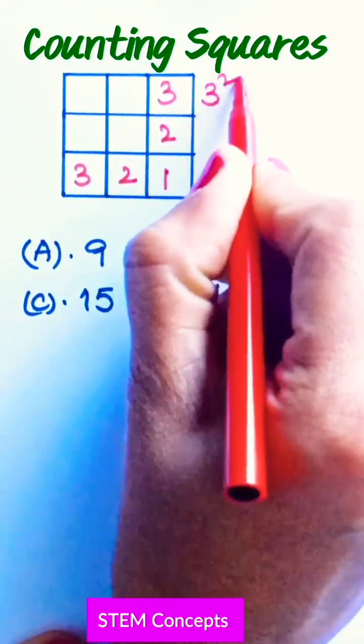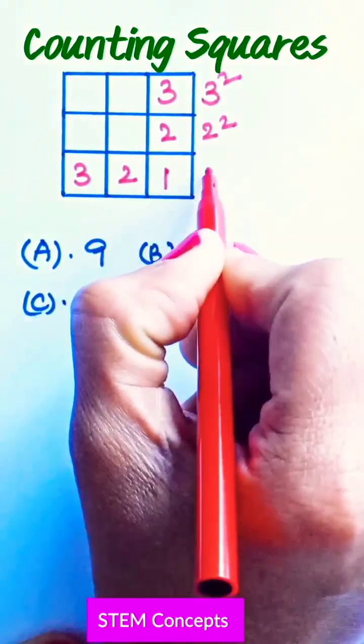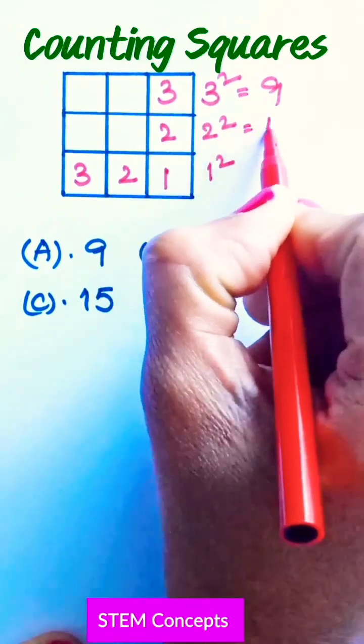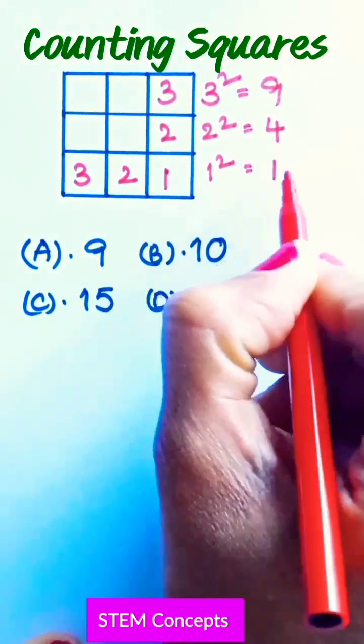Now let us take the square of 3 and square of 2 and square of 1. Now, 3 squared is 9, 2 squared is 4, and 1 squared is 1.